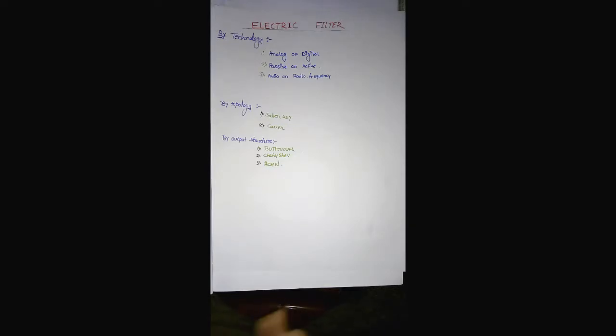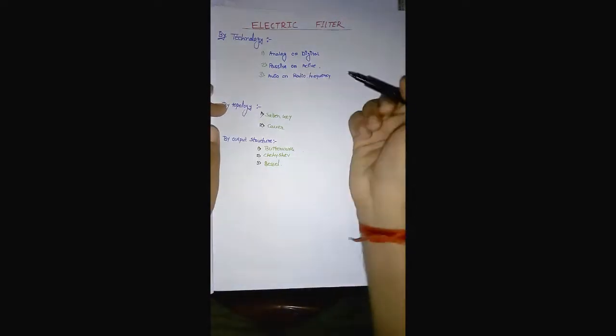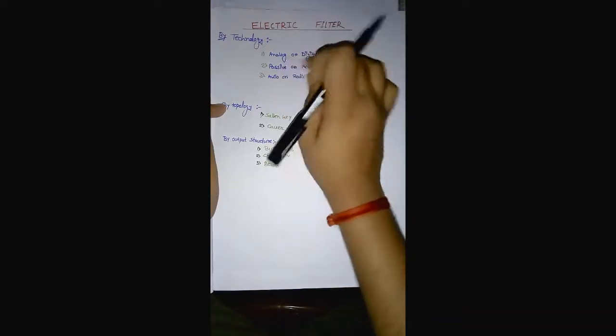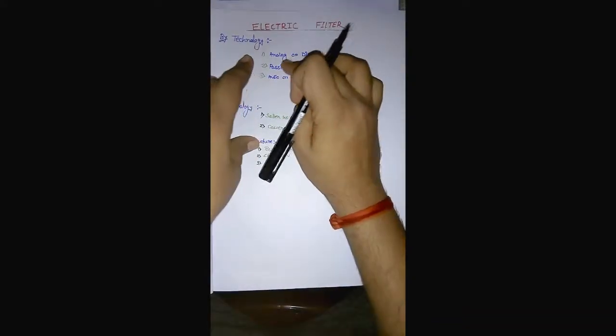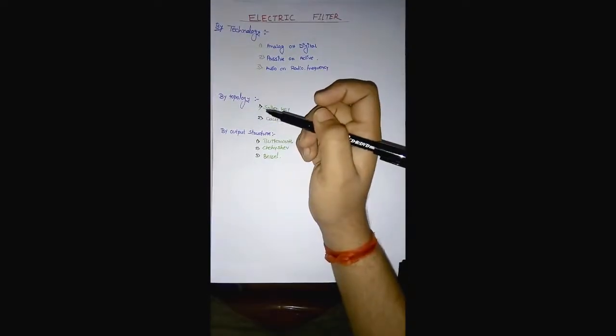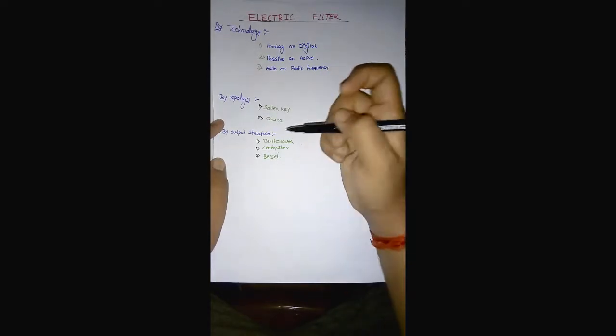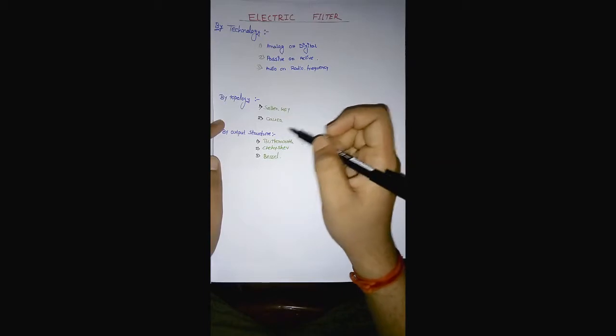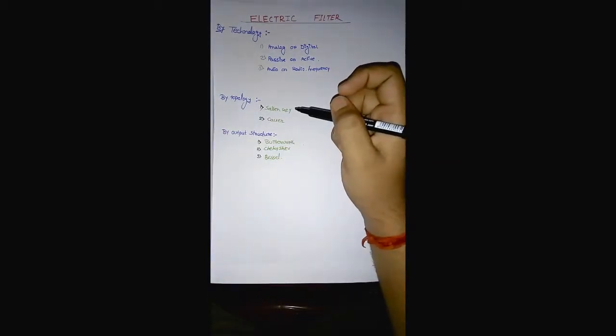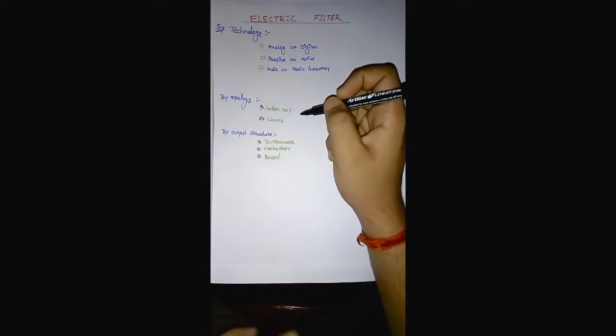Digital filters process signals by analog digital techniques. Passive components include capacitors, resistors, and inductors, while active components include op-amps and transistors. Topologically, filters can be classified by topology such as Sallen-Key, Coward topology, etc.